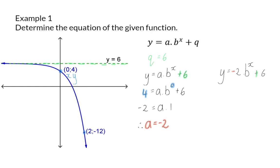And now we need to determine the b value by substituting the second coordinate. So, my y value is minus 12, and the x value is 2. My next step would be to subtract the 6 on the left hand side. And after that, I can divide both sides by minus 2. So, b squared equals 9. If I do the square root on both sides, b will equal 3.